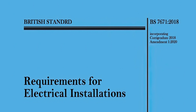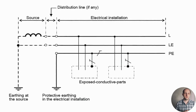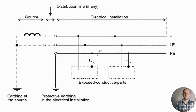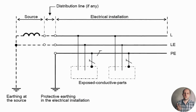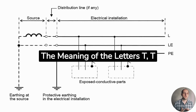BS 7671 provides the following definition: a system having one point of the source of energy directly earthed, the exposed conductive parts of the installation being connected to earth electrodes electrically independent of the earth electrodes of the source. In summary, the TT system has one live part directly earthed at the power source, and the exposed conductive parts of the electrical installation are connected to electrically independent earth electrodes.